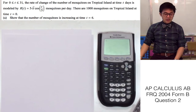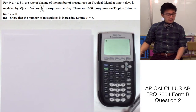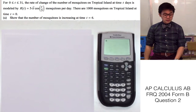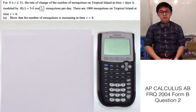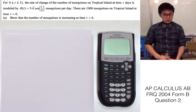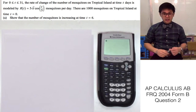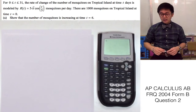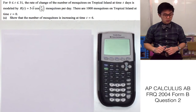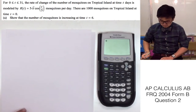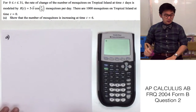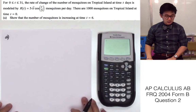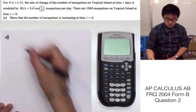There are 1,000 mosquitoes on the tropical island at time t equals 0. For the first question, we need to show that the number of mosquitoes is increasing at time t equals 6. Since this is question number 2 of our FRQ, we are allowed to use the calculator in answering this problem.